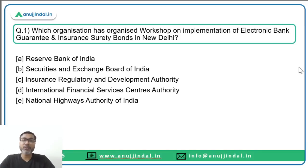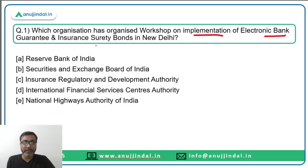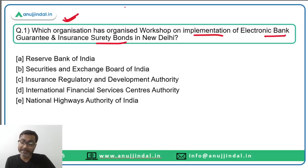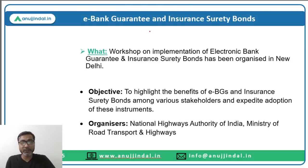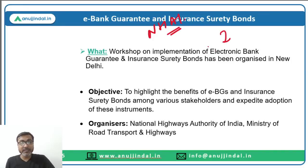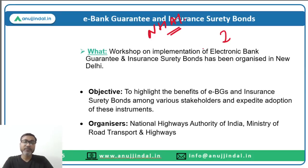The first question is about bank guarantees and insurance surety bonds. There is a workshop organized on implementation of electronic bank guarantees and insurance surety bonds. You need to identify which organization organized this workshop. The correct answer is the National Highway Authority of India, which organized a workshop on implementation of e-bank guarantees and insurance surety bonds.